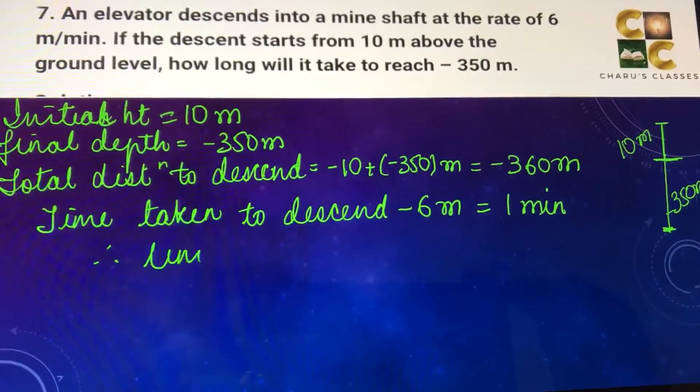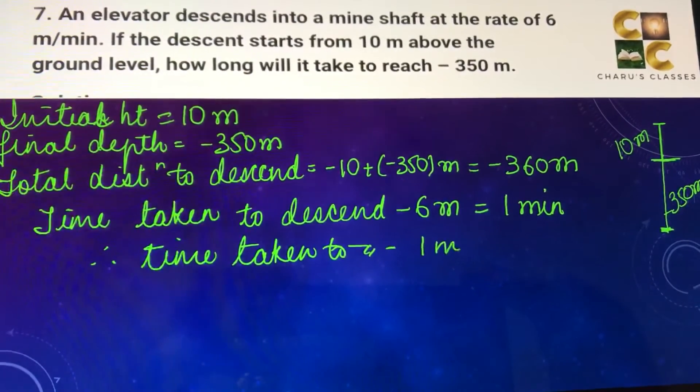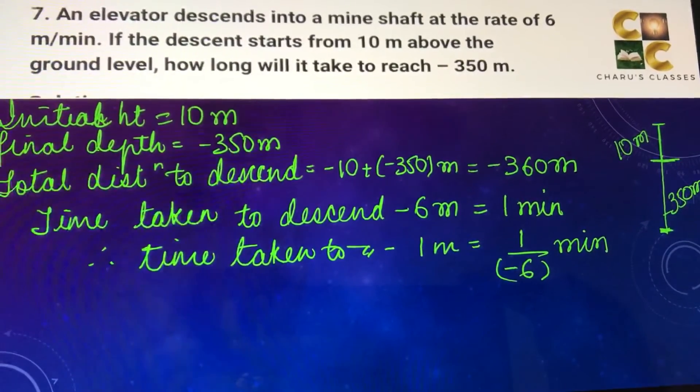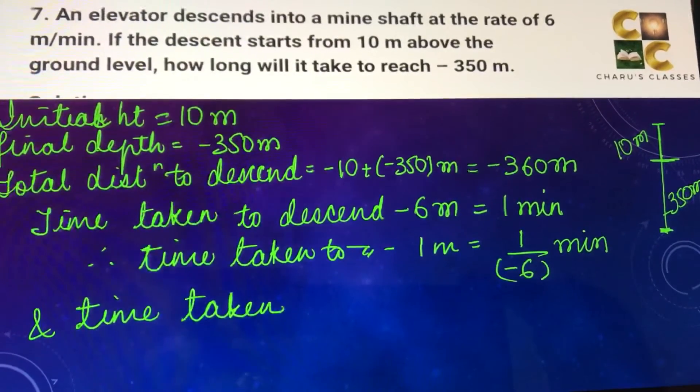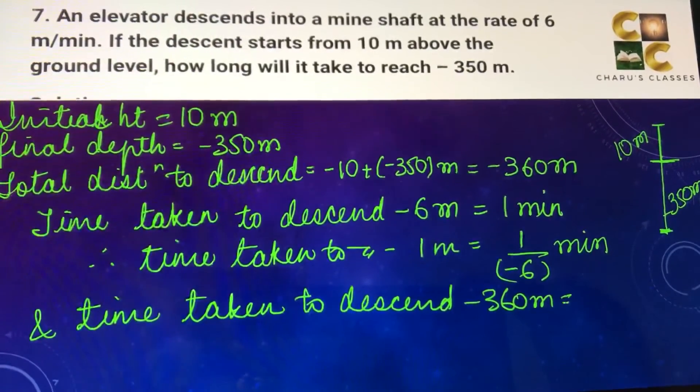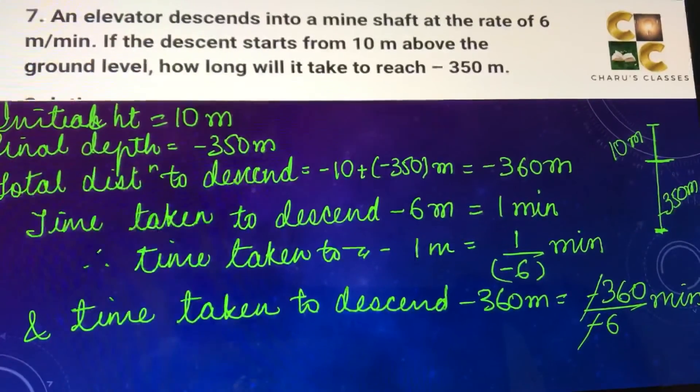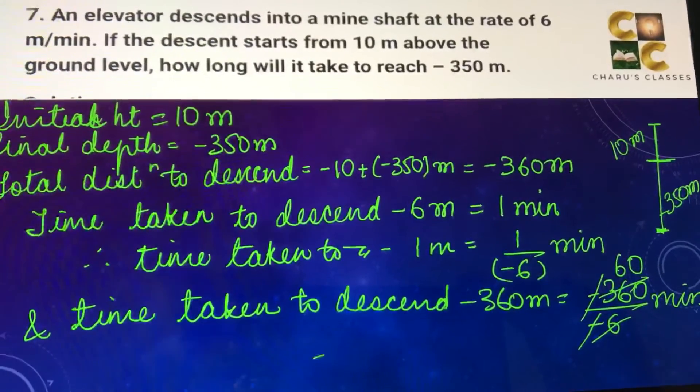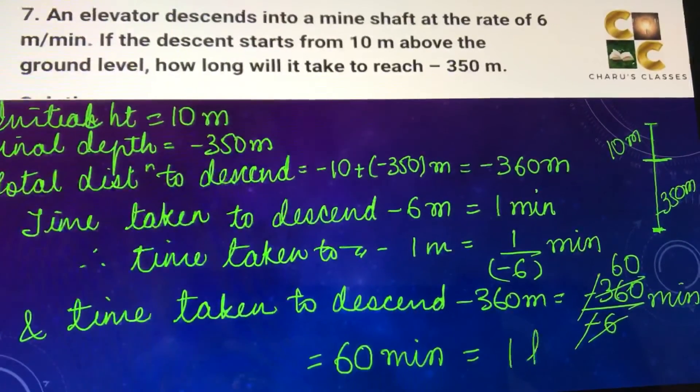Therefore, time taken to descend 1 meter will be 1 by minus 6 minutes. And time taken to descend minus 360 meters, so this minus minus will cancel and 6 and 360 will also cancel. So this is equal to 60 minutes or we can write 60 minutes as 1 hour.